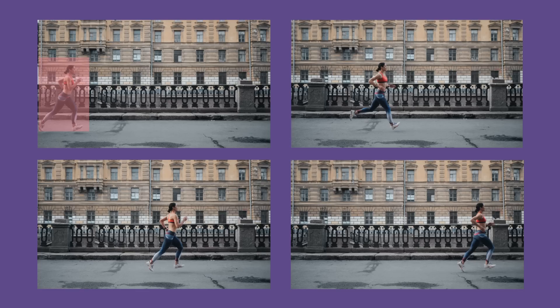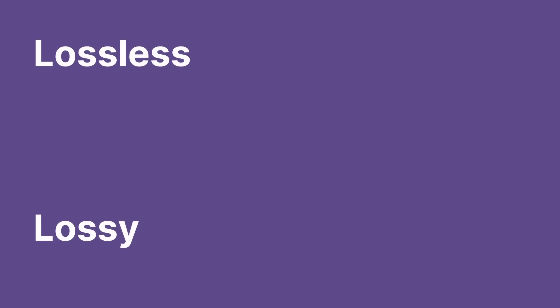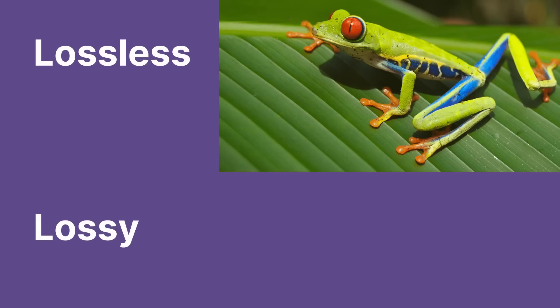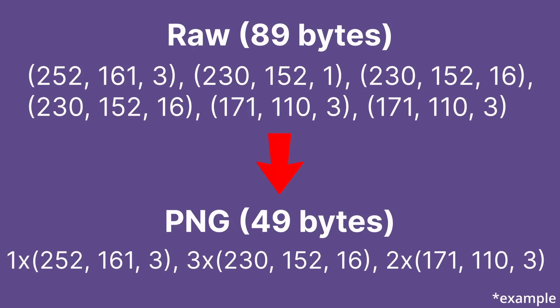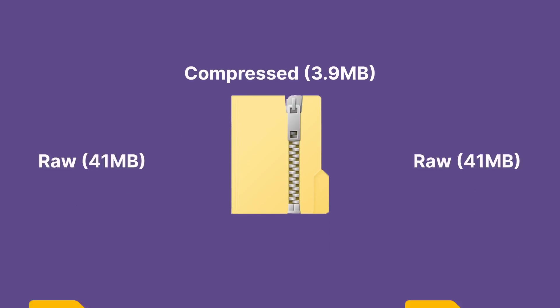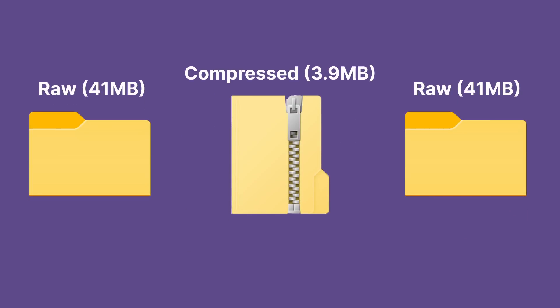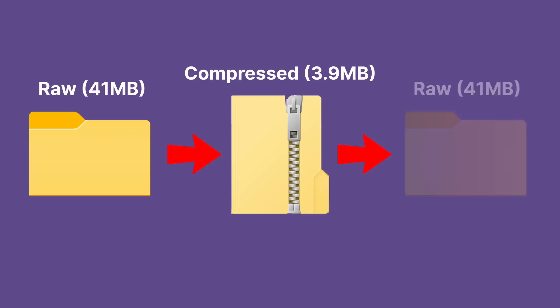The extreme methods required to store all this content is extraordinary. There are two main kinds of compression: lossless and lossy. Lossless compression attempts to express the exact same information in a smaller space without losing any data. A common example of this is zip files. The output must match the input exactly, or else the data would be corrupted.